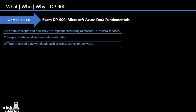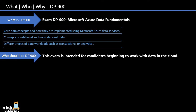DP900 also covers OLTP and OLAP systems. Now let's understand who should do DP900. Data is everywhere — whether you are building a hobby website, a global-scale website, a gaming app, or an e-commerce solution, data comes in all sizes and shapes: structured data in tabular format, semi-structured like JSON files, and complex data like audio or video files. So who should do DP900? Everyone who deals with data.